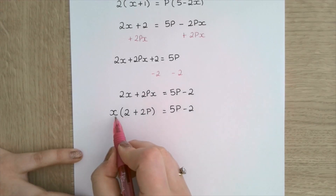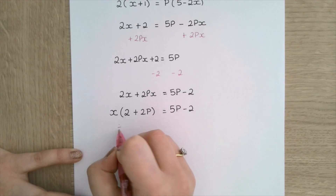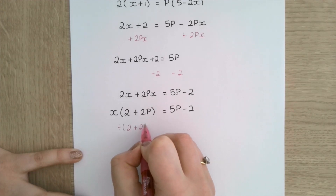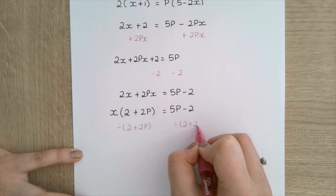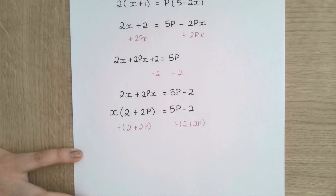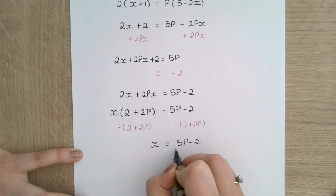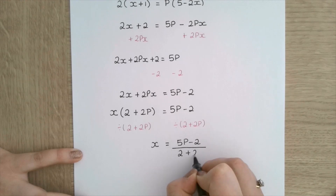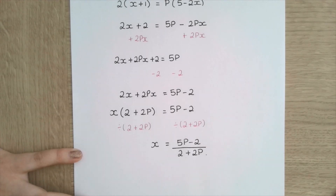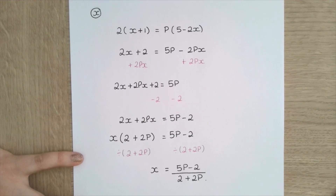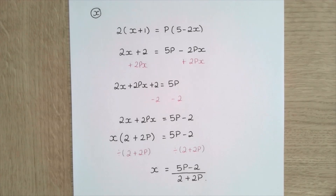I now want to get this bracket away from the x, so I'm going to divide both sides by 2 plus 2p, which leaves me with x is equal to 5p minus 2 all over 2 plus 2p. As you can see, that is a lot more difficult than those examples in my first video. So if that has scared you a little bit, please go back. Other than that, I'm going to continue with my next examples.